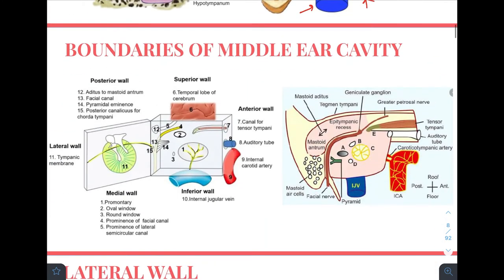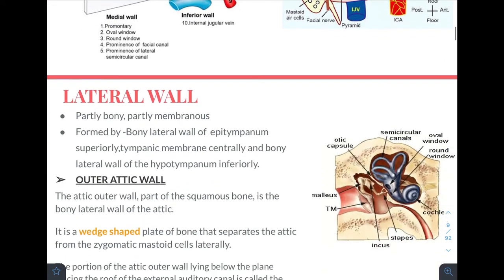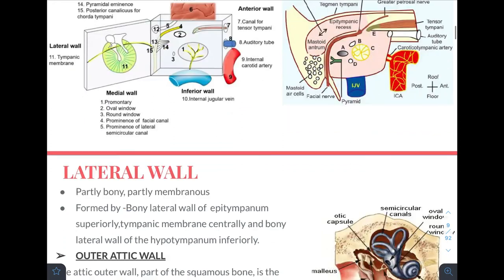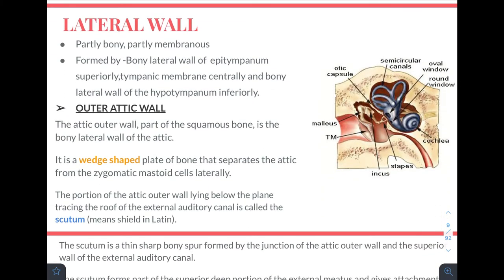There are six walls of the middle ear cavity: superior, inferior, anterior, posterior, medial, and lateral. The lateral wall is partly bony and partly membranous — formed by the bony lateral wall of the epitympanum superiorly, the tympanic membrane centrally, and the bony lateral wall of the hypotympanum inferiorly. The outer attic wall is a wedge-shaped plate of squamous bone separating the attic from the zygomatic mastoid cells laterally.